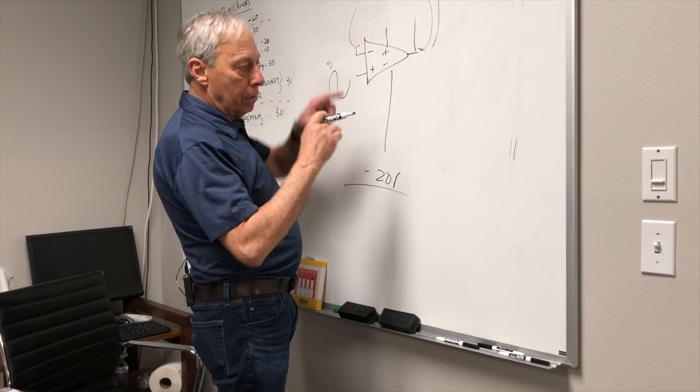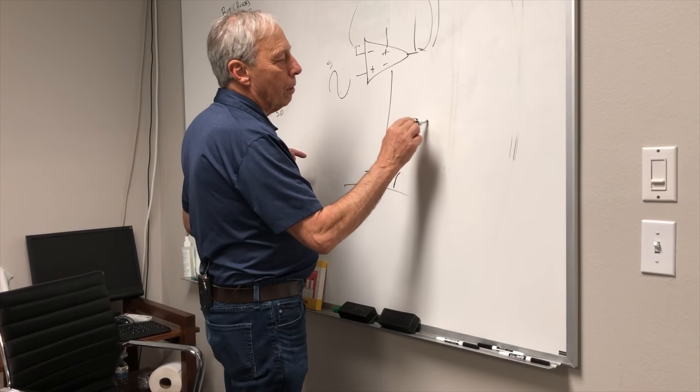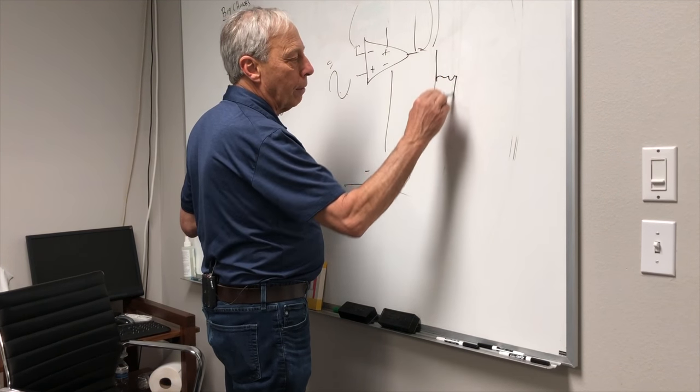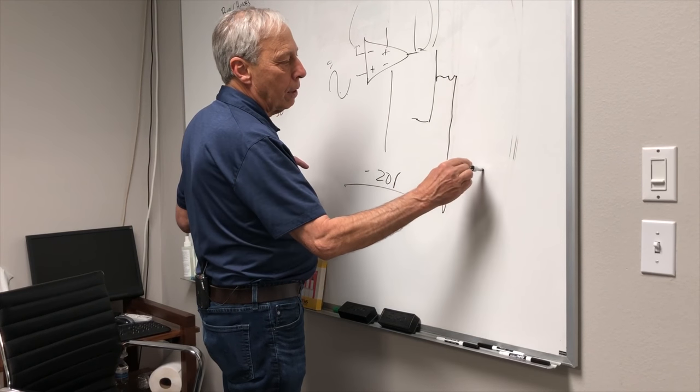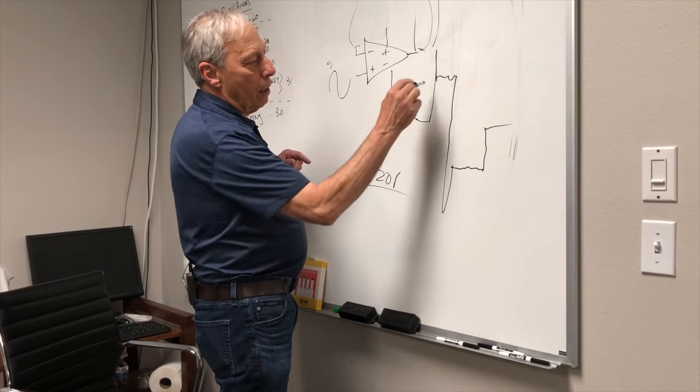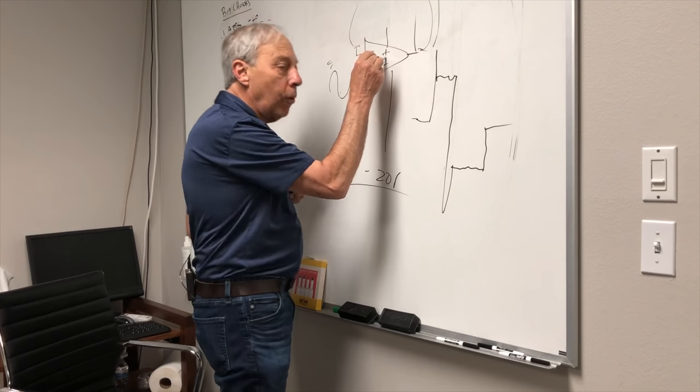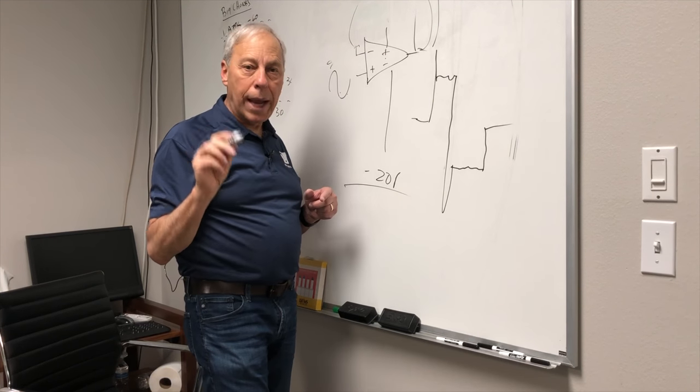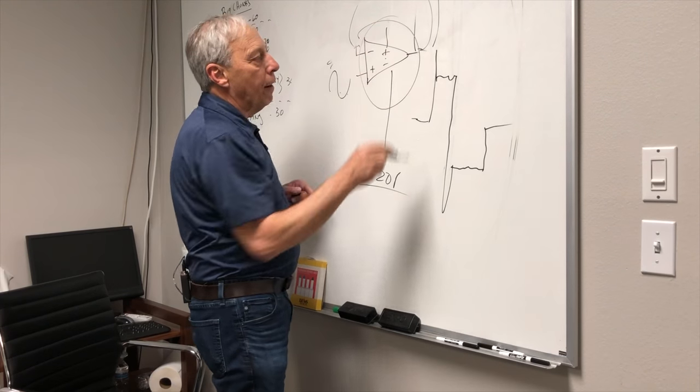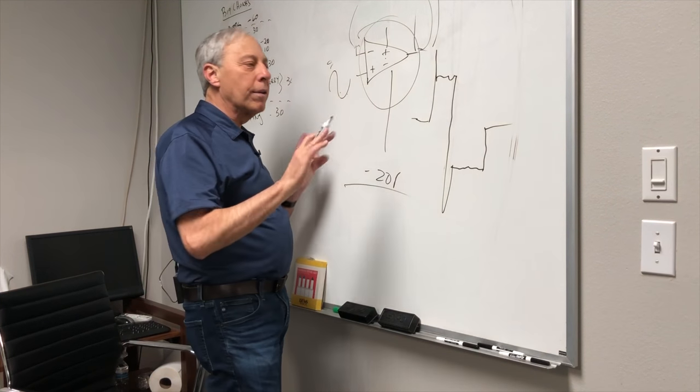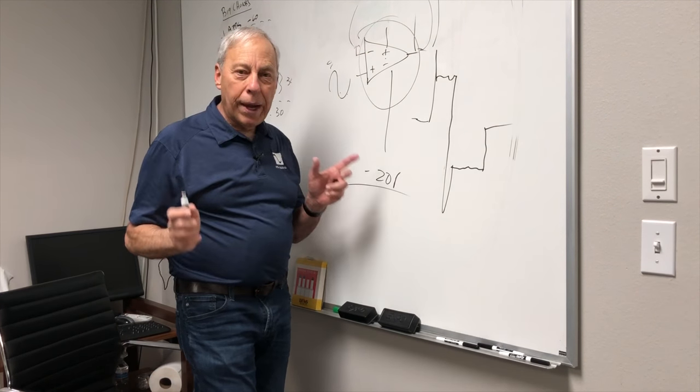And that can cause square waves to have these big ringing things on them like this - I'm exaggerating here - because there's too much feedback. And we can calm that down by controlling the amount of open loop gain inside of our amplifier, which is a whole other subject, and we'll get to that later. But hope that helps.